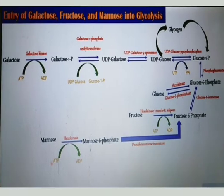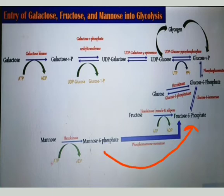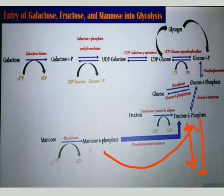When mannose-6-phosphate is converted into fructose-6-phosphate, the whole process is repeated up to the formation of pyruvate. In the examination, from that point forward, the next steps of glycolysis should be written.